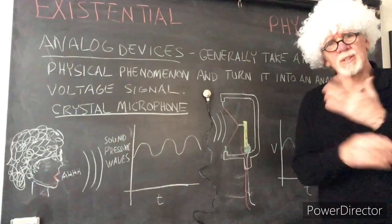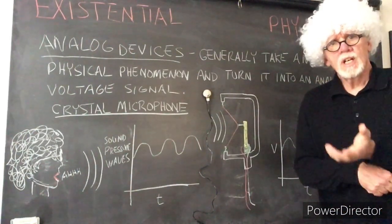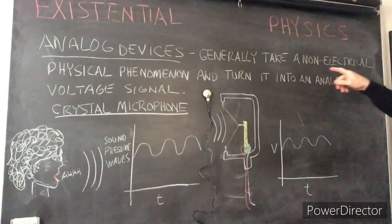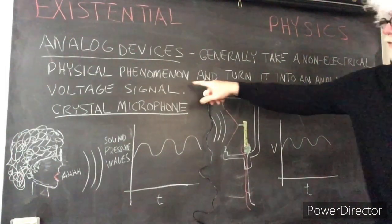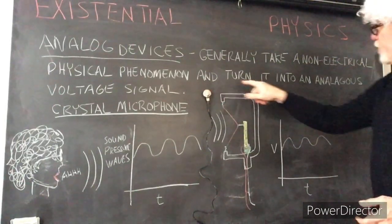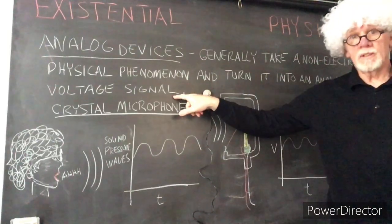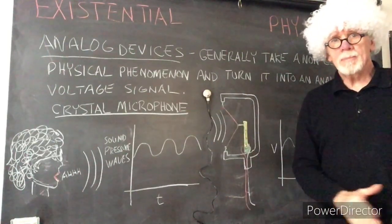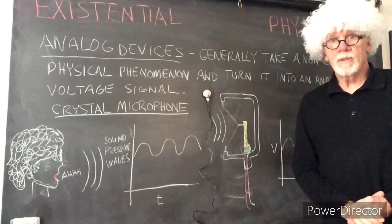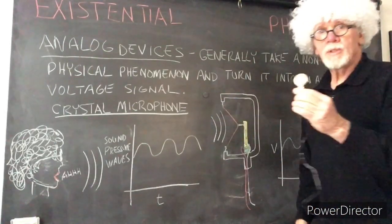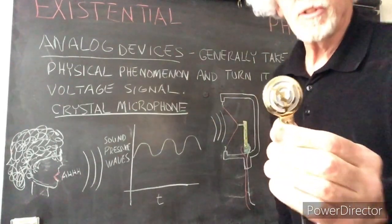So a simple definition, actually a broad and general definition of an analog device, is a device that generally takes a non-electrical physical phenomenon and turns it into an analogous voltage signal. The example I'm going to use today for this demonstration is a simple crystal microphone, which looks like this.